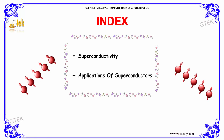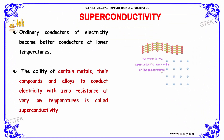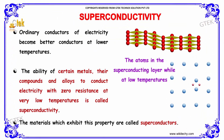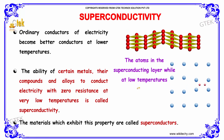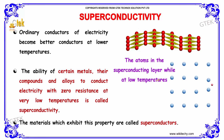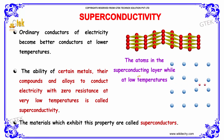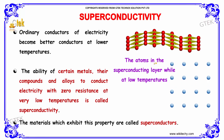Let's see what is superconductivity. Ordinary conductors of electricity become better conductors at low temperature. The atoms in the superconducting layer behave differently at low temperatures. The ability of certain metals, their compounds and alloys to conduct electricity with zero resistance at very low temperature is referred to as superconductivity.